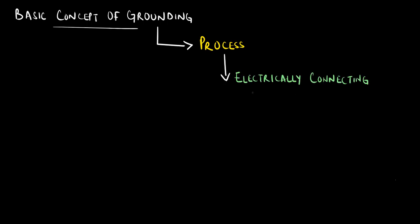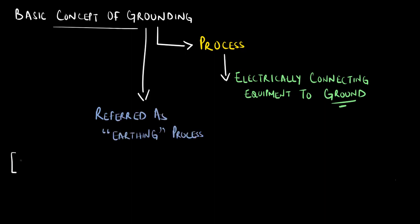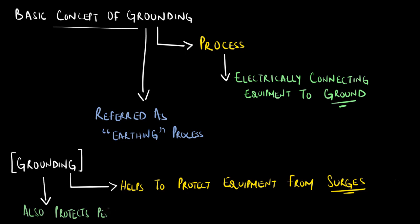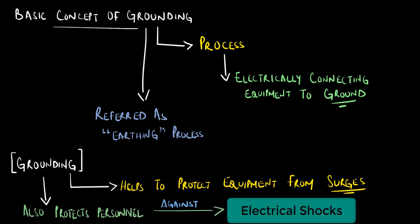Let us start by first establishing the basic concept of grounding. In simple terms, grounding is the process of electrically connecting any type of electrical equipment to the ground. We can also refer to it as the earthing process. By following this procedure, we can safely protect all types of equipment from electrical surges, along with providing the necessary protection for the working personnel against electric shocks.